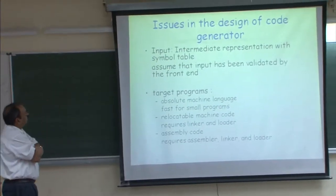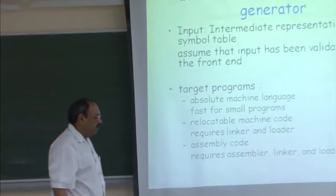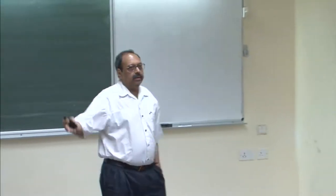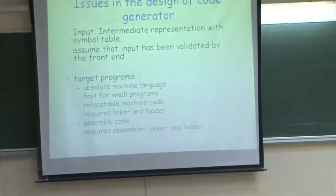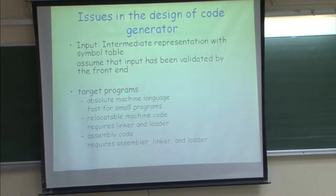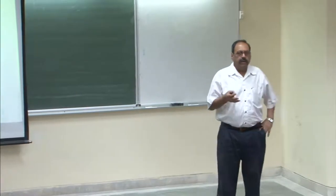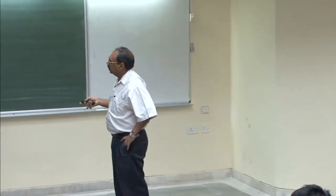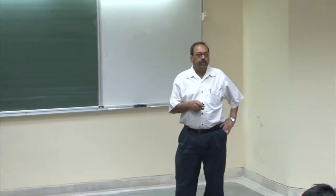The input is an intermediate representation with symbol table. We assume that the input has already been validated by the front end — if the input is not correct with respect to language specifications, even the intermediate code generator would not work, so the process would have been terminated earlier. At this point it is unlikely we will find any errors. The output could be absolute machine language, which is very fast for small programs — we have seen backpatching and generating PC values to produce absolute machine code.